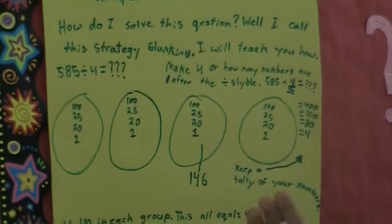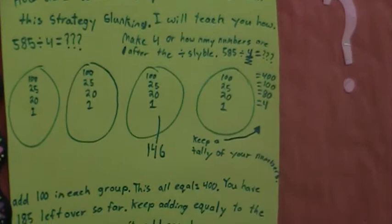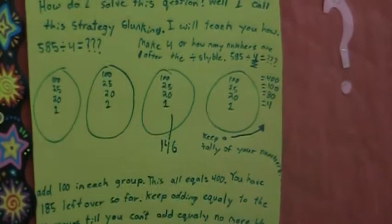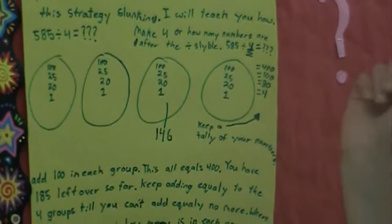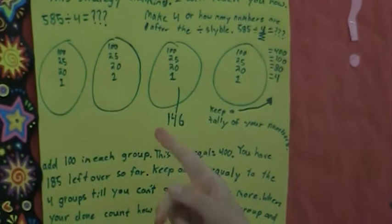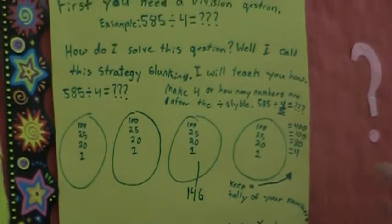We decided to do the hundreds first. That equals 400. Then we put in 25. That equals 100. 400 and 100 equals 500. So we took care of that. Then we add 20 onto each four, in each of the four groups. That equals 80.